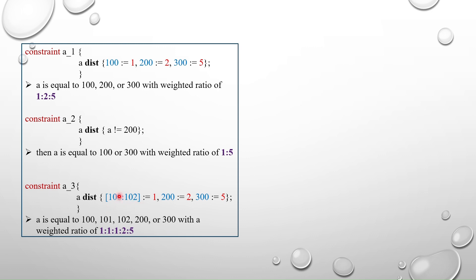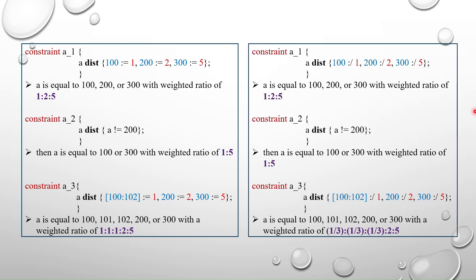With a range like 100 to 102 using the := operator, we have three values: 100, 101, and 102. Since := applies the weight equally, each value gets weight 1. For 200 the weight is 2, and for 300 it is 5. So the ratio is 1:1:1:2:5 for 100, 101, 102, 200, and 300 respectively.